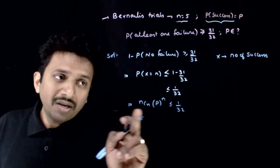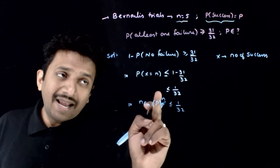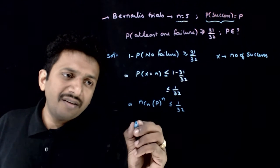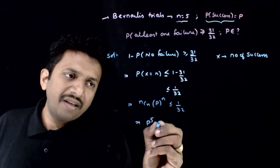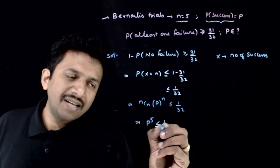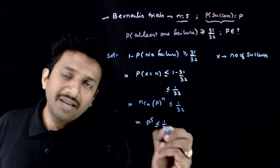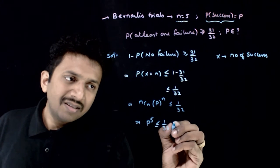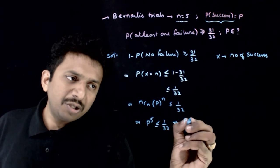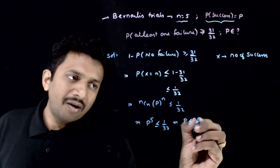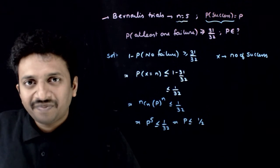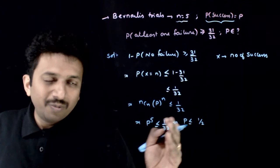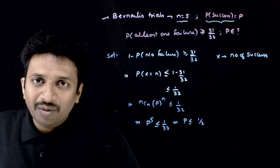Since nCn is 1 and n is equal to 5, this implies p to the power 5 has to be less than or equal to 1 by 32. This implies p should be less than or equal to 1 by 2.